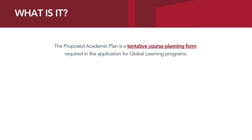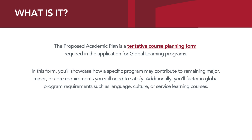The Proposed Academic Plan is a tentative course planning form required in the application for global learning programs. In this form, you'll showcase how a specific program may contribute to remaining major, minor, or core requirements you still need to satisfy. Additionally, you'll factor in global requirements such as language, culture, or service learning courses.